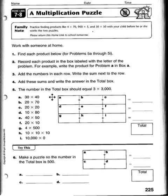Solve problem A, 30 times 40. 3 times 4 is 12 with your two zeros, makes it 1200.